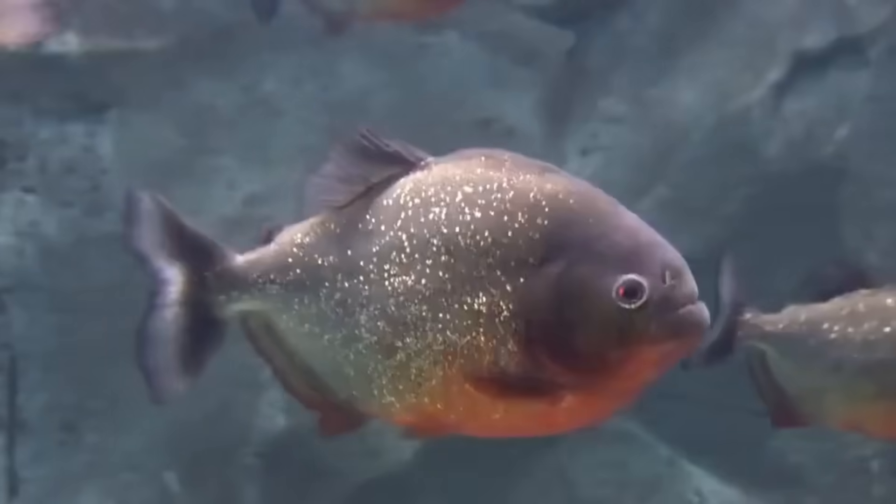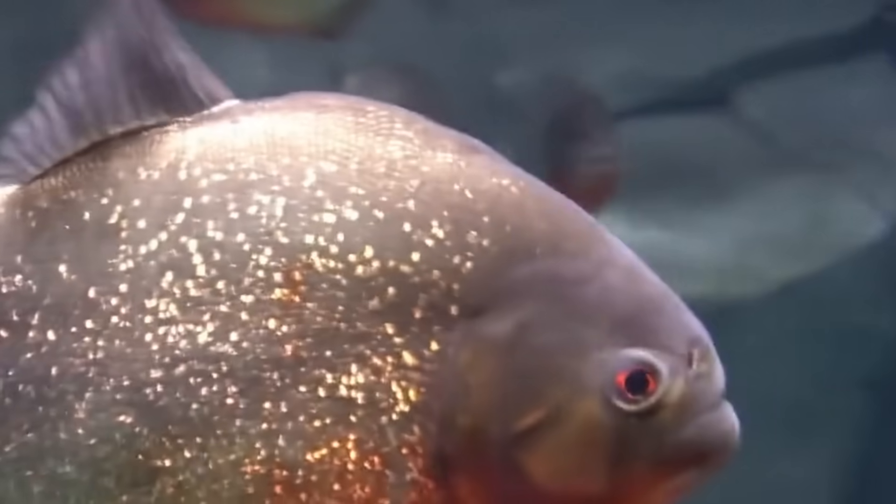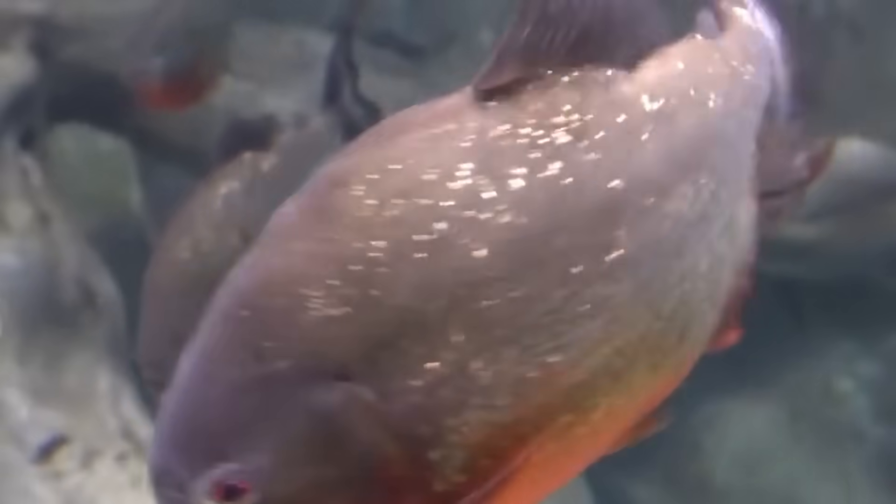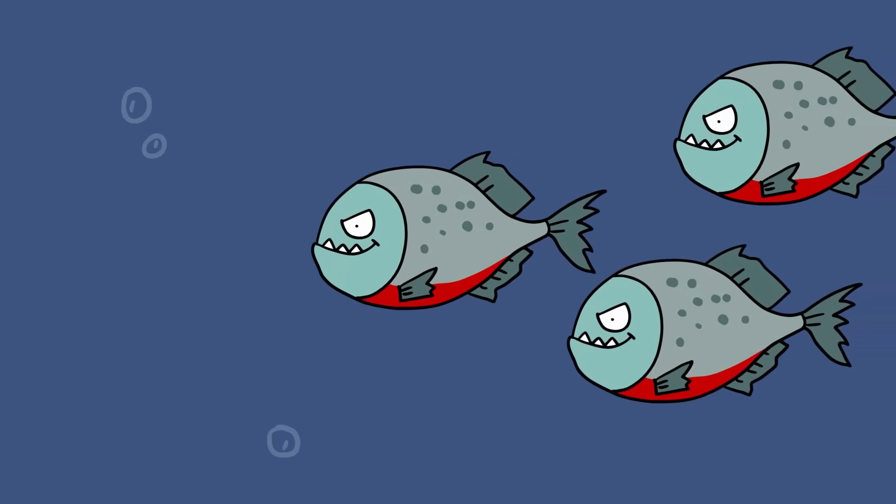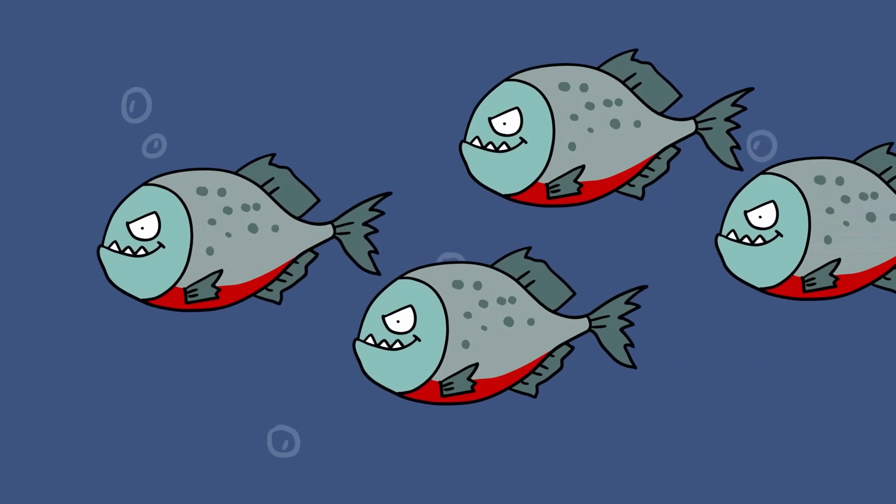Red-bellied piranhas. The quintessential terror of the Amazon River, so widely feared that they have inspired a number of questionable Hollywood movies, red-bellied piranhas are actually primarily scavengers. That's not to say they won't attack healthy creatures. After all, given that they can grow to be over 30 centimeters and swim around in large groups, they tend to be more than a match for most animals.